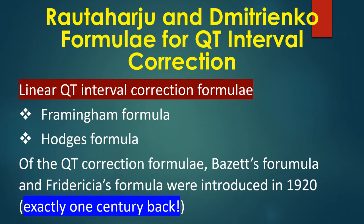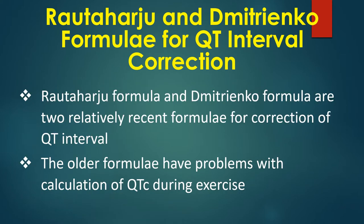Linear QT interval correction formulae are the Framingham formula and Hodges formula. Of the QT correction formulae, Besset's formula and Friedrichia's formula were introduced in 1920, exactly one century back. Ratharju formula and Mitriyango formula are two relatively recent formulae for correction of QT interval.